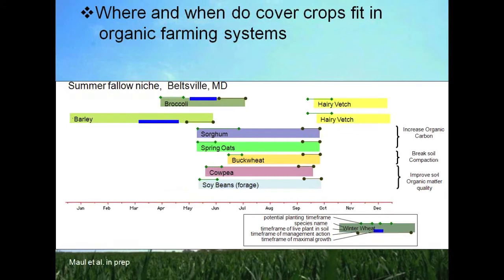We can use the same approach to look at the summer fallow niche. Using broccoli as an example: it's planted in the early spring, has a fast growth period early in the season, and is harvested in early summer. This harvest date corresponds with the planting of summer annual cover crops — for example, buckwheat can be planted in mid-June to July. It will grow through the summer, and then we can mow or roll it in the fall in time to plant another winter annual cover crop to carry us through the winter months.